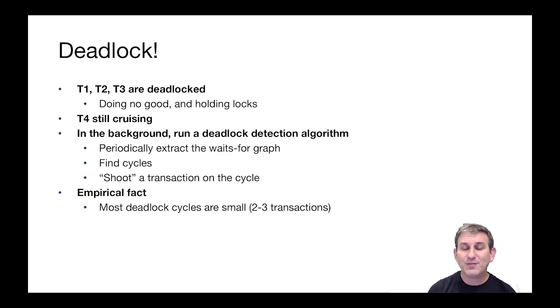An empirical fact that's been seen in systems is that most deadlock cycles you get are small. There may be two or three transactions around. It's not difficult to find these cycles, and it's not very costly to abort one transaction to make them go ahead.